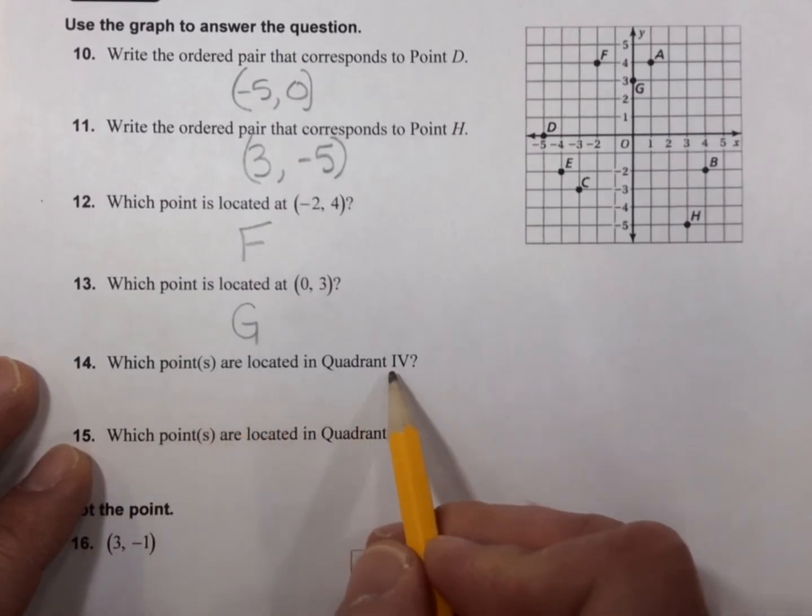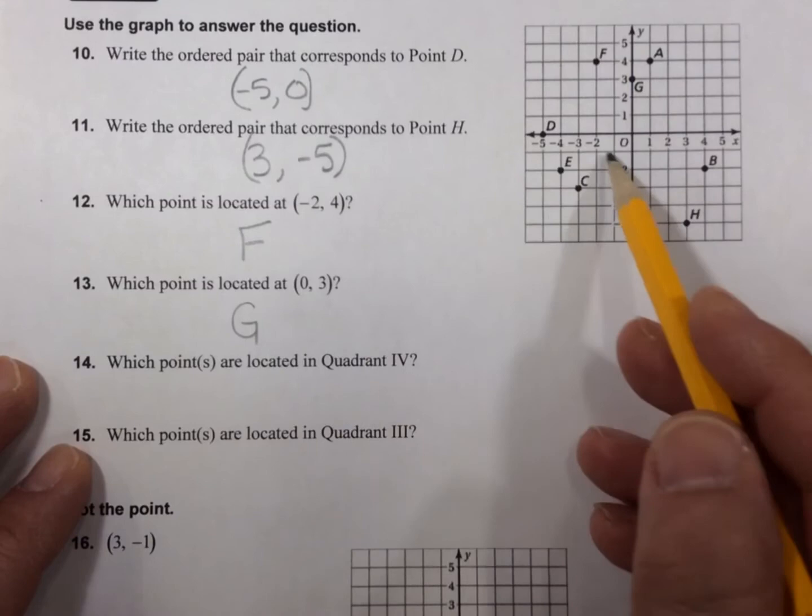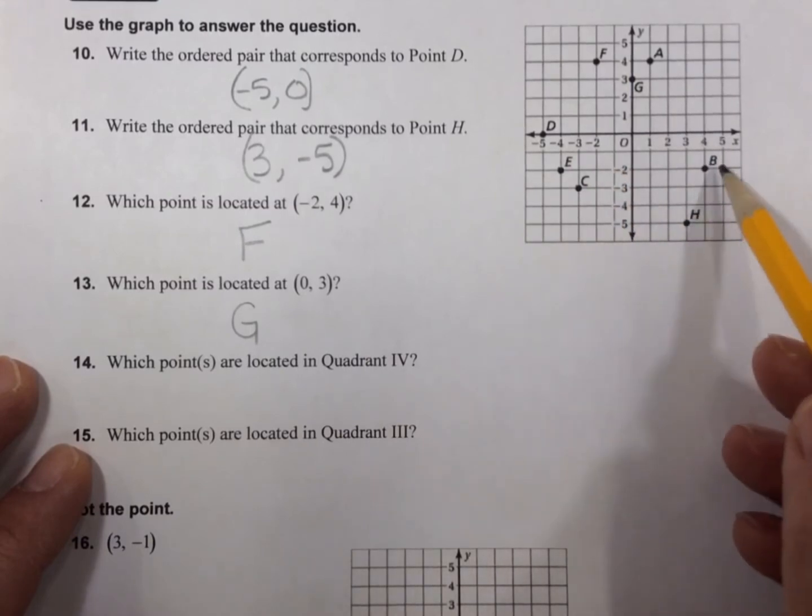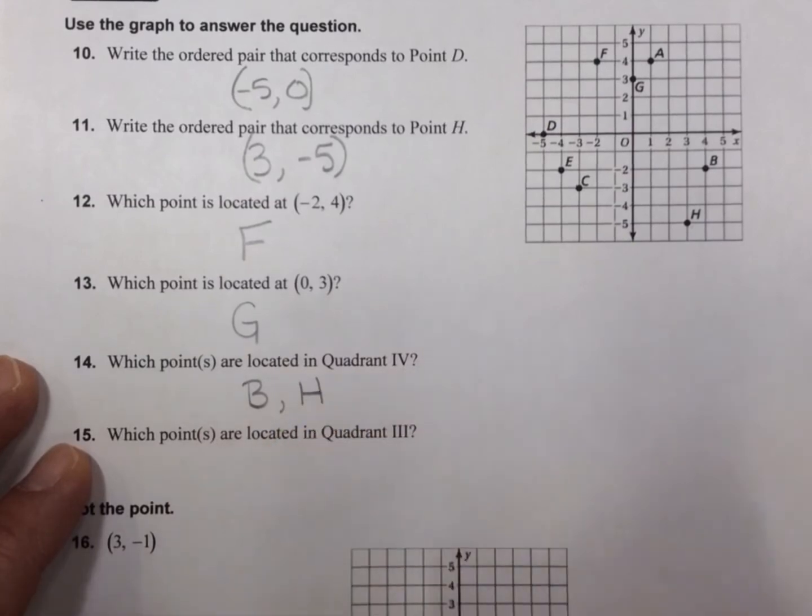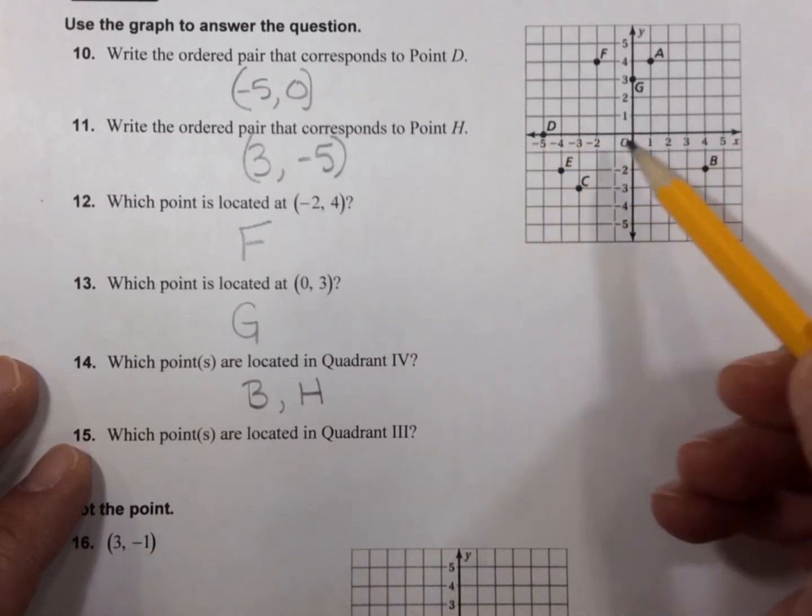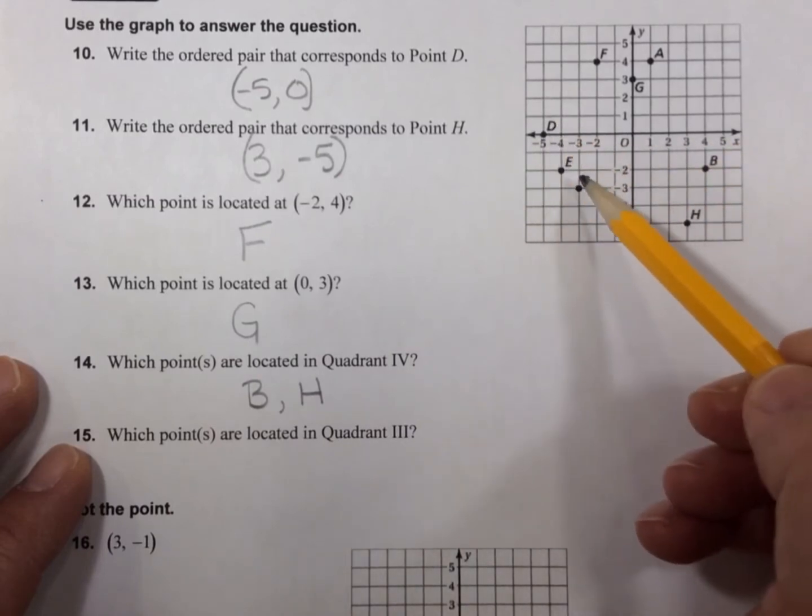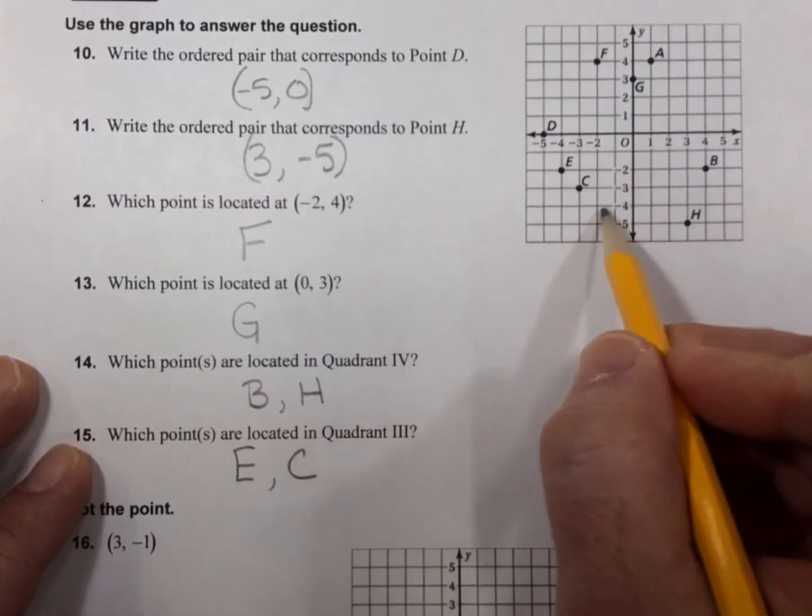Which points are located in quadrant 4? Well, here's quadrant 1, quadrant 2, quadrant 3, quadrant 4. B and H are both in quadrant 4. Which points are located in quadrant 3? That would be back here. D is not in quadrant 3. It's right on the x-axis. It's not in any quadrant. But E and C are both found in quadrant 3.